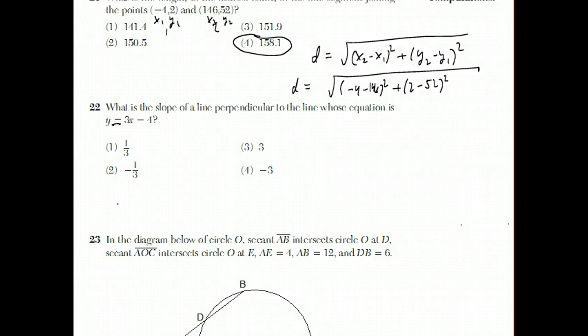For this question, lines that are parallel have the same slope. Lines that are perpendicular have slopes that are negative reciprocals of each other. The slope of this original line is 3, because when it's in this form, the coefficient will be the slope.